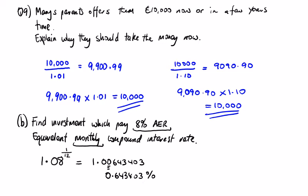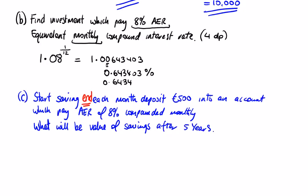So 0.643403 will be the monthly interest rate for 8% AER, and we're asking this question to round it to four decimal places. Read the question carefully. So 0.6434.